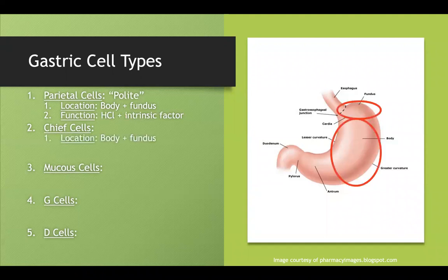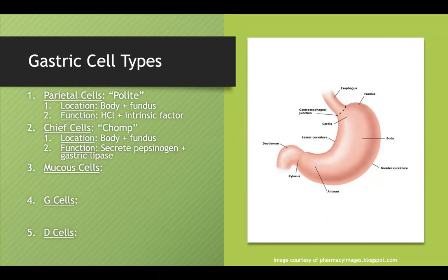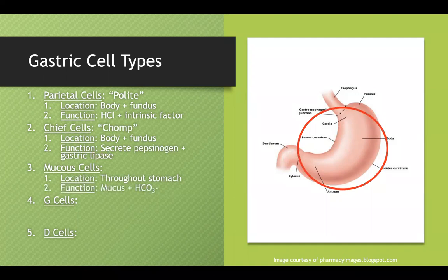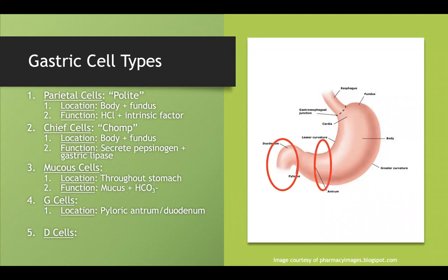Chief cells are also in the body and fundus. They secrete pepsinogen and gastric lipase, both helpful for enzymatic breakdown — I think of them as our CHOMP cells. Mucus cells are located throughout the stomach and produce mucus and bicarb, counteracting the acidic environment. G cells are located in the pyloric antrum and throughout the duodenum, secreting gastrin — our 'gas cells' because gastrin acts like a gas pedal, increasing acid production.